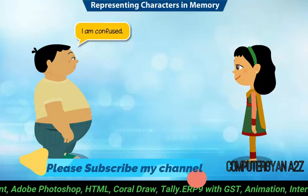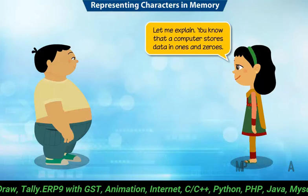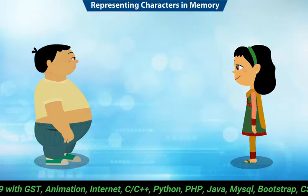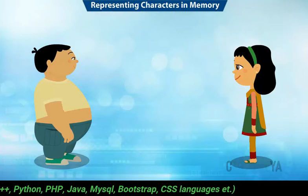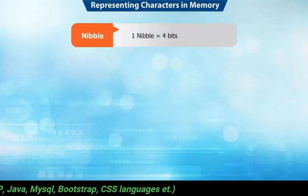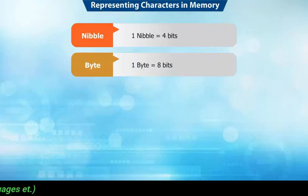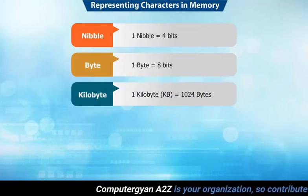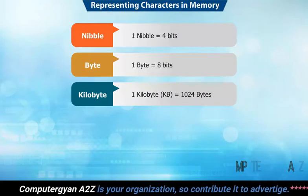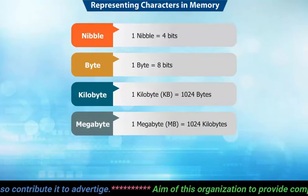I am confused. Let me explain. You know that a computer stores data in ones and zeros. Each of these digits, zero and one, is called a binary digit or simply a bit. A nibble is a collection of four bits — one nibble is equal to four bits. A byte is a collection of eight bits. Generally, the storage capacity of a computer is expressed in terms of bytes. One kilobyte is equal to one thousand and twenty-four bytes. One megabyte, or one MB, is equal to one thousand and twenty-four kilobytes.